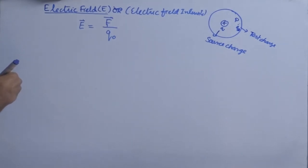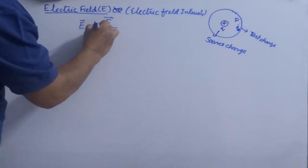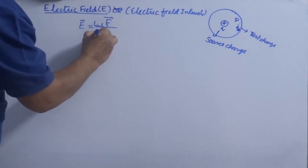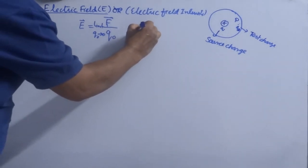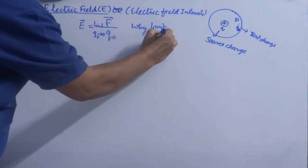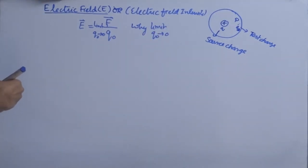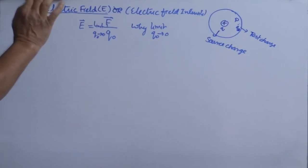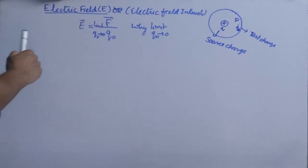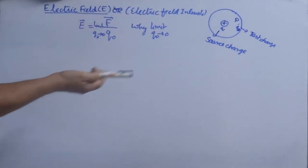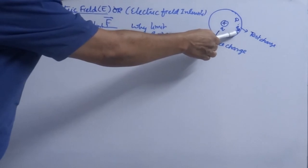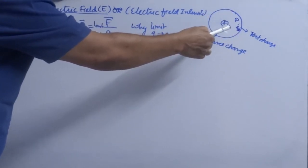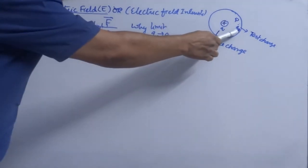Electric field at a point is defined as the force experienced by a unit test charge, and we put a limit: limit q₀ tends to zero. Why is this limit applied? Every charge has the natural characteristic of producing an electric field. To check the presence of electric field at any point, we use a test charge. But since the test charge is also a charge, it also develops its own electric field.